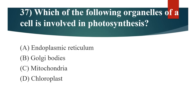37th question: Which of the following organelles of a cell is involved in photosynthesis? Option A: Endoplasmic reticulum. Option B: Golgi bodies. Option C: Mitochondria. Option D: Chloroplast. Answer is Option D: Chloroplast.